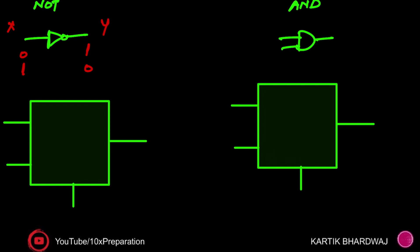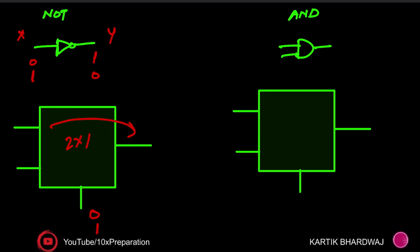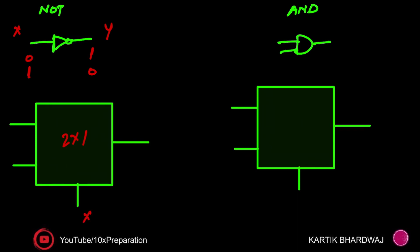Here x is the input and y is the output. Now, for the 2x1 MUX — it has two inputs and one select line, which selects what the output will be. If the select line is zero, input I0 goes to output; if it is one, input I1 goes to output. So to implement NOT gate: x is the select line, I0 is one and I1 is zero. You get the complement of x at the output.